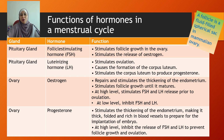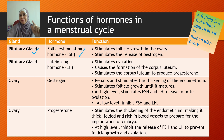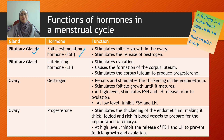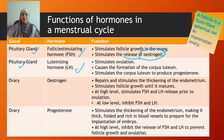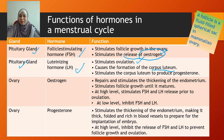There are four important hormones involved in the menstrual cycle. The first one is follicle stimulating hormone, or FSH, secreted by the pituitary gland. Its function is to stimulate follicle growth in the ovary and to stimulate the release of estrogen by the follicle. The second is luteinizing hormone, LH, also secreted by the pituitary gland. LH stimulates ovulation, causes the formation of the corpus luteum, and stimulates the corpus luteum to produce progesterone.